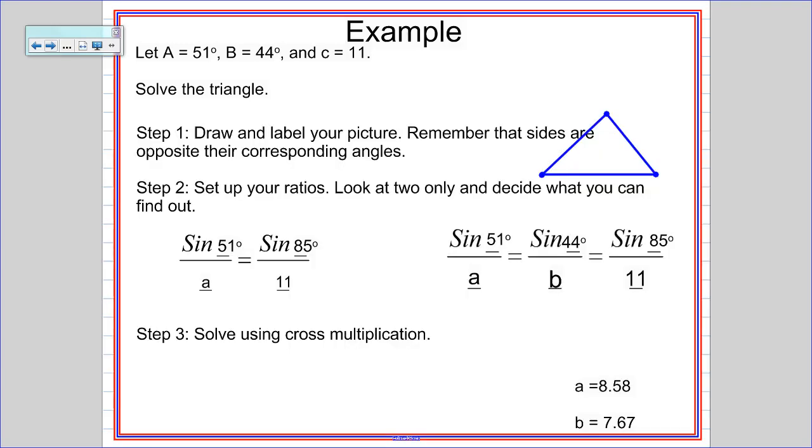All right, here it goes. So the first thing I want to do is draw a triangle. Now, I measured out this triangle to make sure that it was right, and my 51 degree angle is here, my 44 degree angle is there. That makes this 85 degrees, and the 11 goes opposite that. It's really helpful to label. Remember lowercase letters for sides, capital letters for angles.